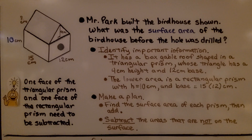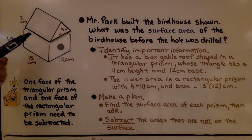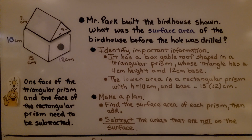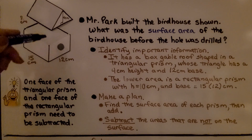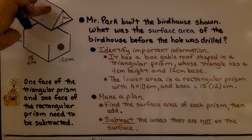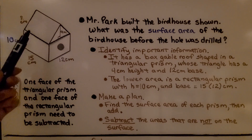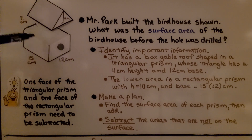What do they mean by areas not shown on the surface? One face of the triangular prism underneath the triangle — if we removed the roof, there would be a flat surface underneath it that's not shown on the triangular prism. And one face of the rectangular prism — the top part — is also not shown and needs to be subtracted. Whatever area is under the triangular prism is identical to the top face of the rectangular prism.